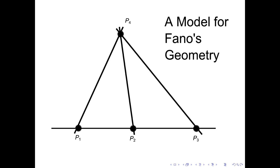Since each of these lines has to have exactly three points on it, and the third points on any of these lines can't be any of the points already shown, there must be three more points: P5, P6, and P7. At this point, we have proved that there are at least seven points in the geometry.